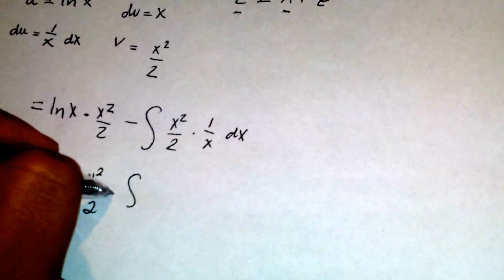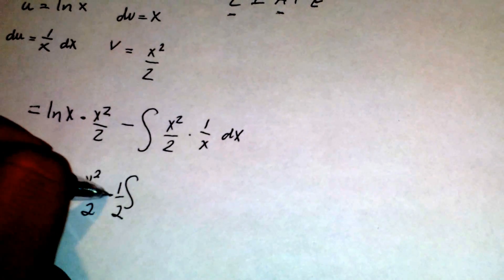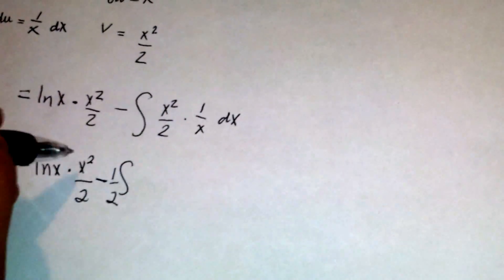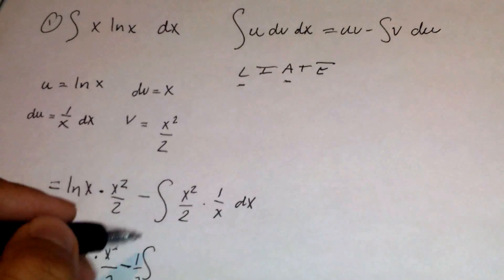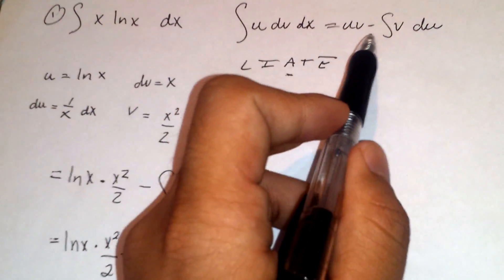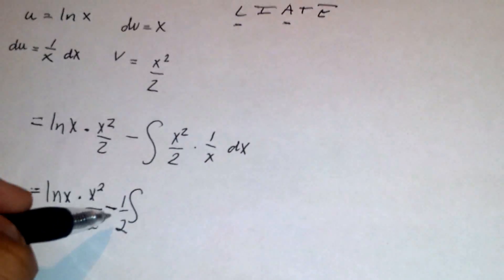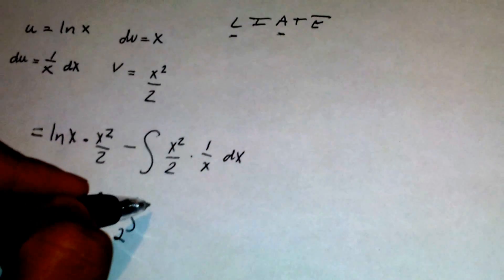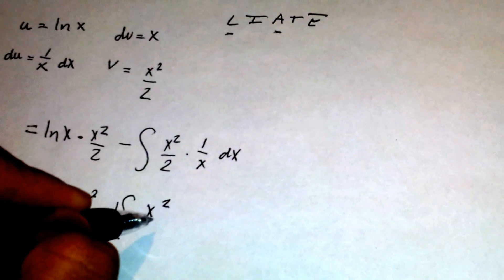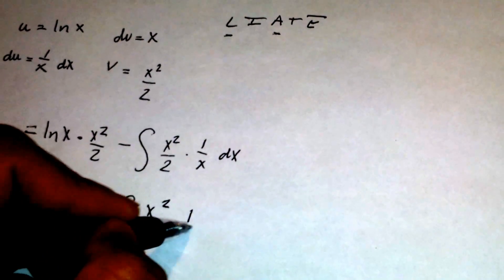So we can bring the 1 half out front, and remember this is minus the integral, as you can see from the rule. So we brought the 1 half out as a constant, and what we're left with is x squared times 1 over x.